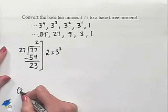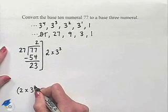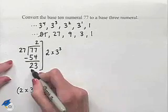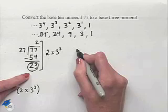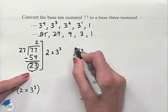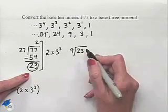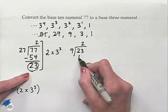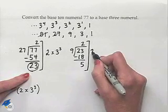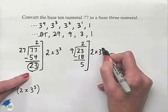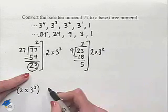Now we take our remainder 23 and move down to the 9. We note that 23 can be divided by 9. 9 goes into 23 twice, that's 18. We subtract to get 5. This tells us that we have 2 times 3² in our expansion.